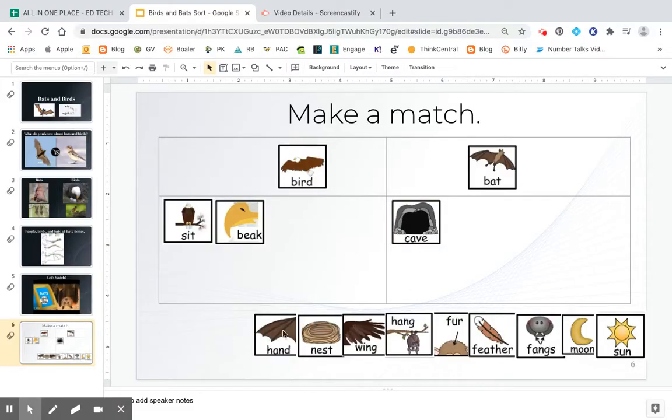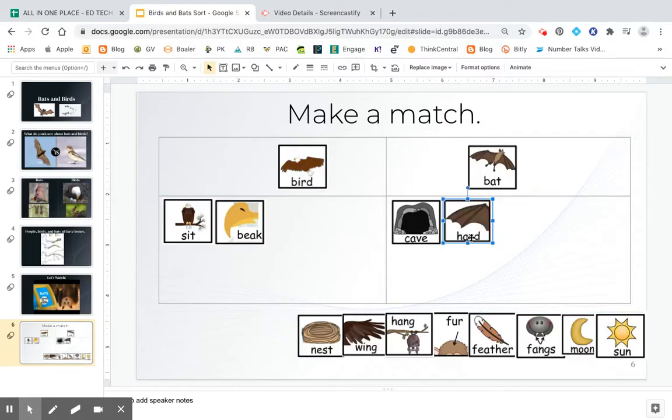Okay. Who has a hand that's kind of like us? Would it be a bird or a bat? Let's see. Are you telling me it's a bat? You probably remember that from the picture with the bones. Remember when we were looking at that?